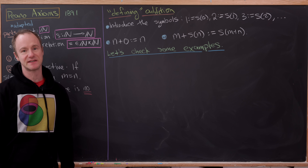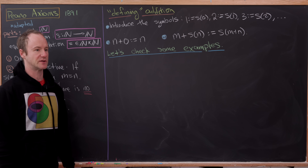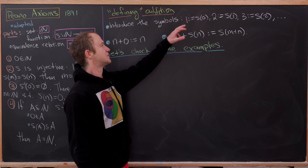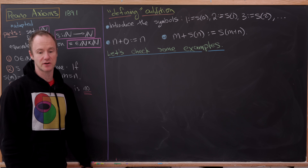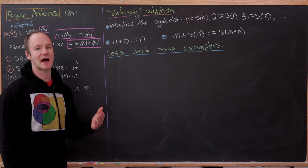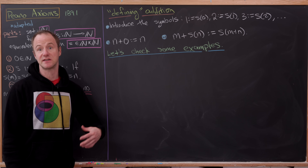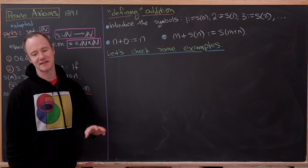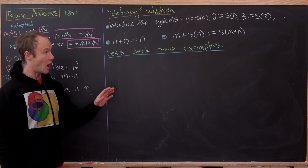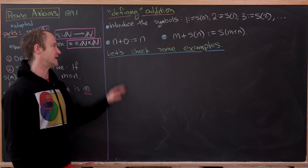I'll introduce some symbols and name them simply as the natural numbers, because that's really what we're building — a model of the natural numbers. The symbol 1 is defined to be the successor of 0, S(0). So now you can see why we use the word 'successor' — it's the thing that comes right after 0. Next, 2 equals S(1), 3 equals S(2), and so on. After introducing those symbols, we define N plus 0 to equal N.